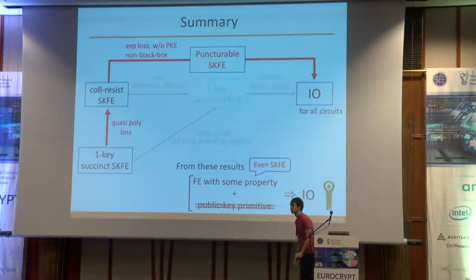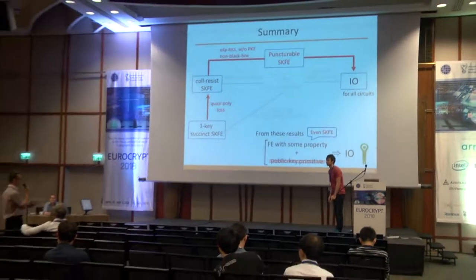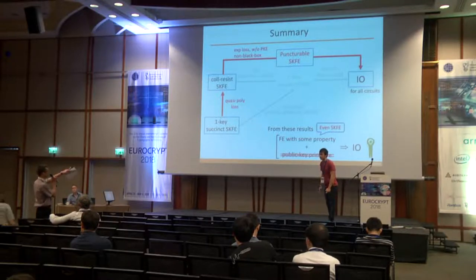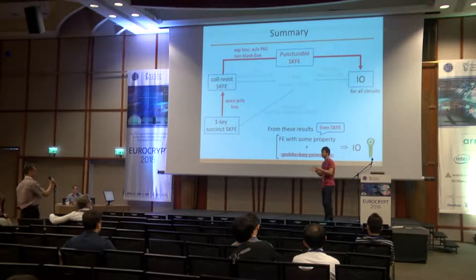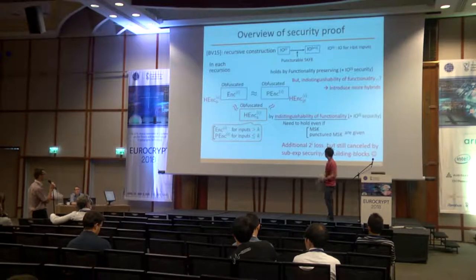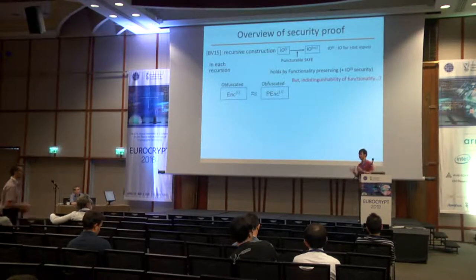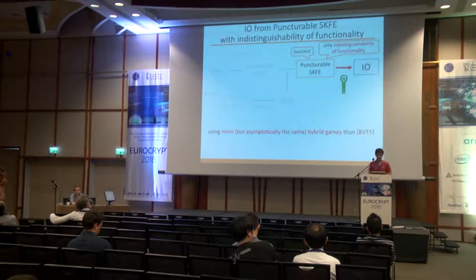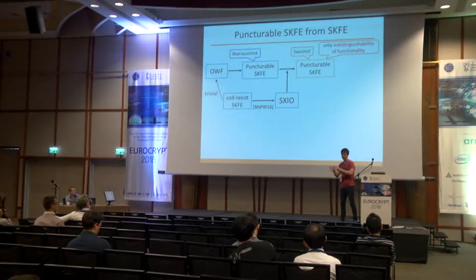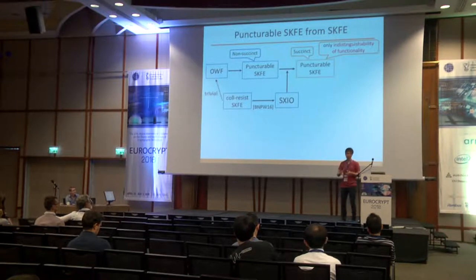Question: Can you comment on the use of SXIO in your construction? You said SXIO gives obfuscation where the obfuscated circuit is still quite big, so how do you get succinctness from that? So the question is how we construct succinct puncturable SKFE from non-succinct SKFE using SXIO. Intuitively, SXIO is I.O. that can generate an obfuscated circuit whose size is slightly smaller than the truth table. So SXIO has the power to compress a circuit compared to the size of the truth table, and by this power we can achieve succinctness.